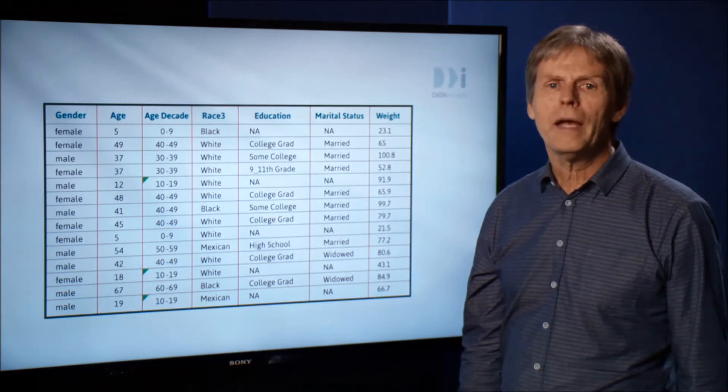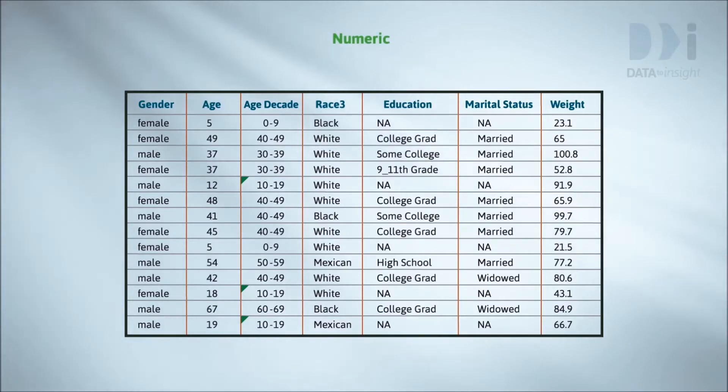In week one, we made a distinction between numeric and categorical variables. This distinction is important because the type of a variable determines how we look at it. Numeric variables are those we can think of as measurements, like age and weight here.